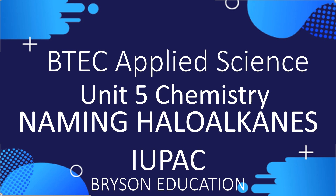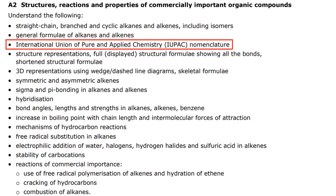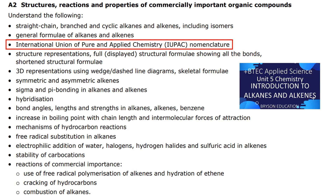Hello, welcome to my channel on chemistry lessons. This is BTEC Applied Science, Unit 5 Chemistry. We're going to look at how we name haloalkanes using the IUPAC rules, which comes under learning aim A2 — the IUPAC nomenclature.